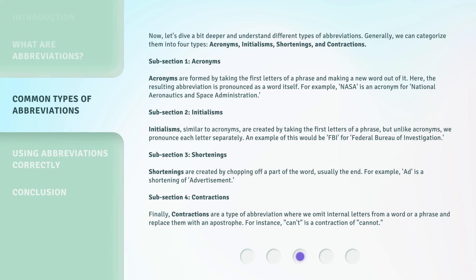Now, let's dive a bit deeper and understand the different types of abbreviations. Generally, we can categorize them into four types: acronyms, initialisms, shortenings, and contractions.